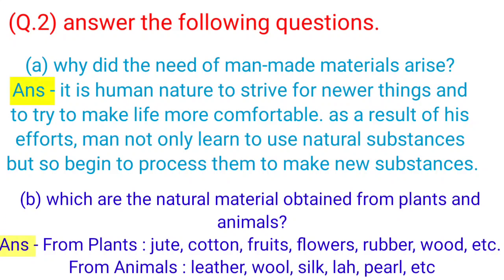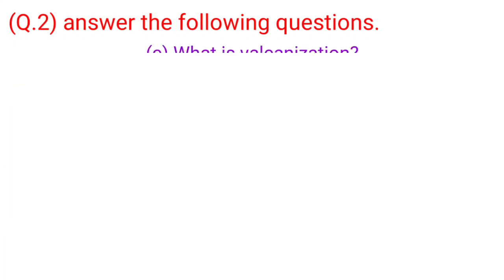B. Which are the natural materials obtained from plants and animals? Answer. From plants: jute, cotton, fruits, flowers, rubber, wood, etc. From animals: leather, wool, silk, lac, pearl, etc.